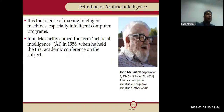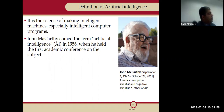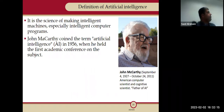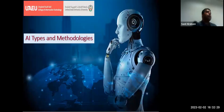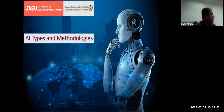Coming back to the father of AI — John McCarthy, born in 1927 and passed away in 2011 — he defined AI as 'the science of making intelligent machines, especially intelligent computer programs.' That's a really good definition. As mentioned, John McCarthy coined the term AI in 1956. Now we know the history and some definitions. The question is: how can I use AI, what are the types, the methodologies, and existing tools?